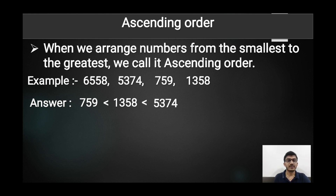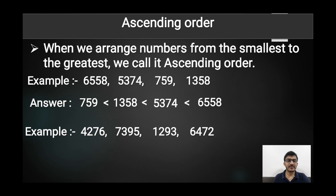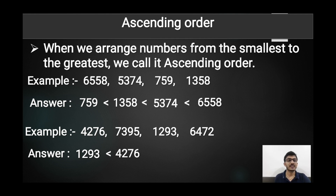Continuing the first ascending order example: after 1358, we write 5374, which is smaller than 6558, and finally we write 6558. Let's take one more example: 4276, 7395, 1293, and 6472. The place values of thousands are 4000, 7000, 1000, and 6000 respectively. The smallest is 1000, so we write 1293 first, then 4276, then 6472, then 7395. This is our ascending order.